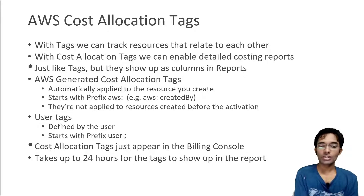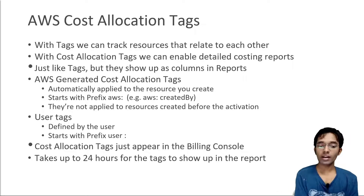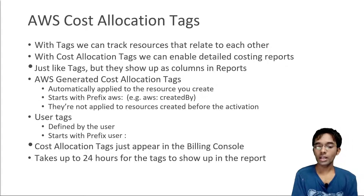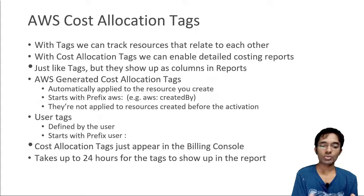You also have user tags — those are the tags that you create yourself, and they start with the prefix 'user:'. Cost allocation tags only appear in the billing console, not anywhere else, and it takes about 24 hours for the tags to show up in the reports.